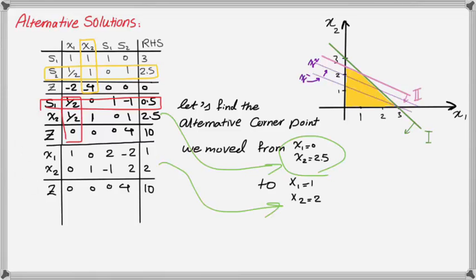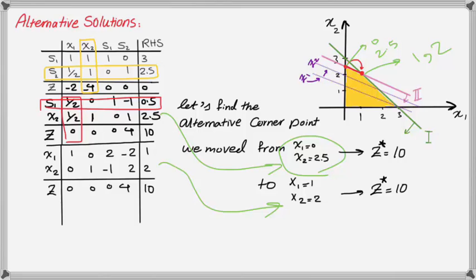We move from the point X1 = 0, X2 = 2.5 to the point X1 = 1, X2 = 2, and in both cases the Z value equals 10. We can see how this happens graphically. Remember that all the points between the two corner points are also feasible and optimal, but they are not basic. The basic solutions are only the two corner points found through the simplex method.